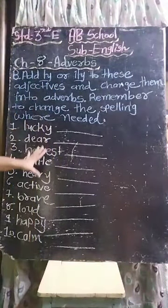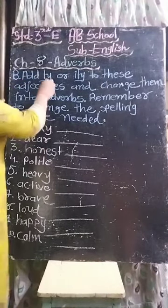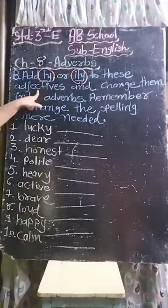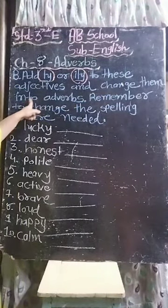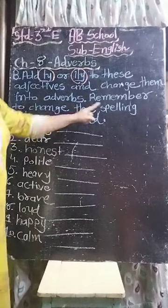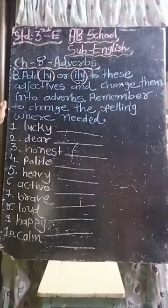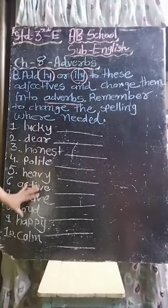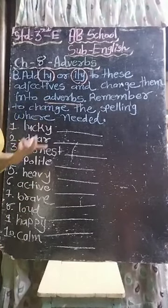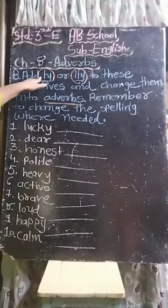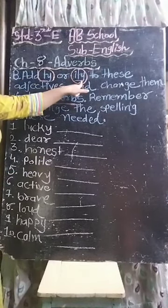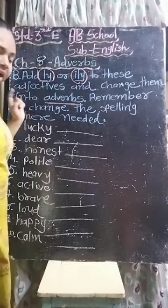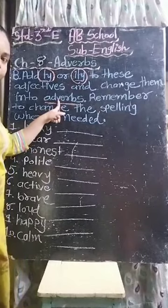In this exercise, you have to add -ly and -ily to these adjectives and change them into adverbs. Remember to change the spelling where needed. ये सारे adjectives हैं, उसको आपको adverbs में convert करना है — ly और ily add करके। जब ly और ily add करोगे, तो adjective adverb बन जाएगा।